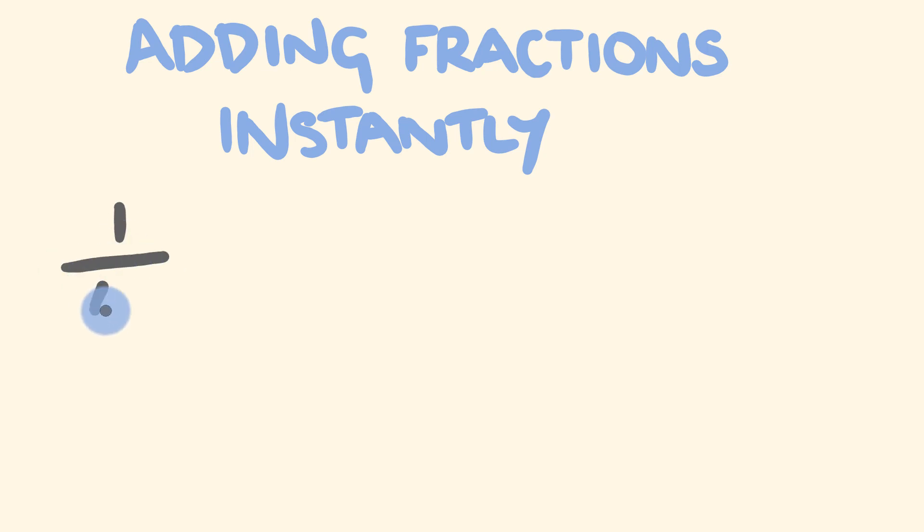Let's get into an example. Let's get one quarter and to this we're going to add one third. Nice easy one to start off with, they will get harder. So how do we go about getting our answer here? Well first off, let's get the bottom number, the denominator. We're going to get our two denominators from what we've got here, the four and the three, and we are going to multiply: four times three. We've got our denominator which is 12.